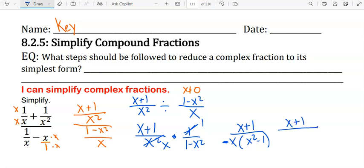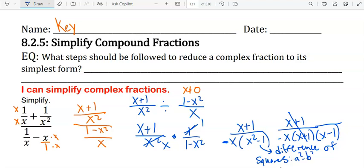So we have x plus 1 over negative x, x plus 1, x minus 1. Now those can cancel. This is a difference of squares. a squared minus b squared equals a plus b times a minus b. So that your simplified fraction is 1 over negative x times x minus 1.